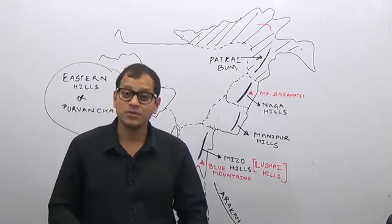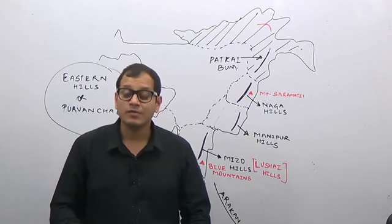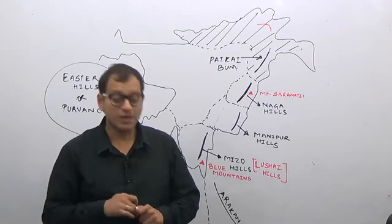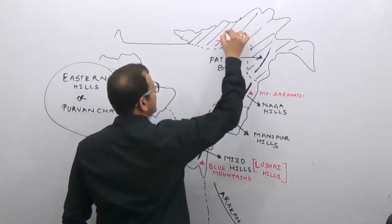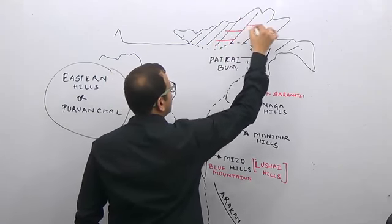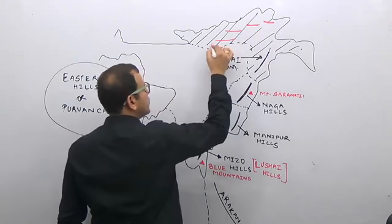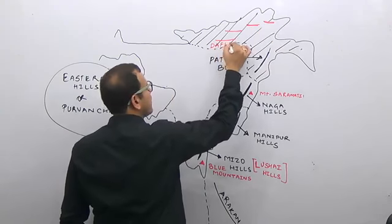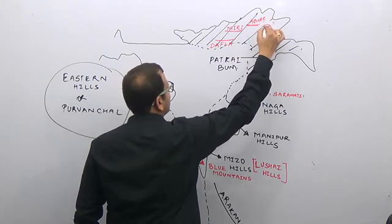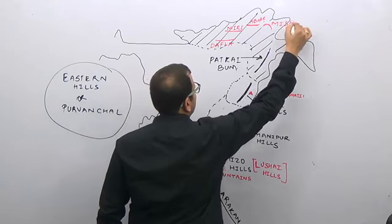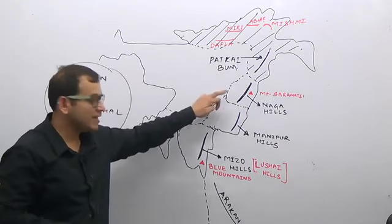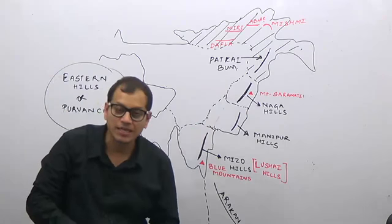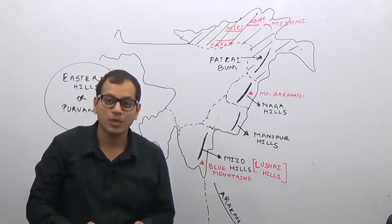In Arunachal Pradesh, we also have the Shivalik ranges, which are known by different names: Dafla Hills, Miri Hills, Abhor Hills, and Mishmi Hills. These are the Shivalik ranges in Arunachal Pradesh, while Patkai Bum, Naga Hills, Manipur Hills, and Mizo Hills (or Lushai Hills) are part of the Eastern Hill Complex, that is the Purvanchal region.